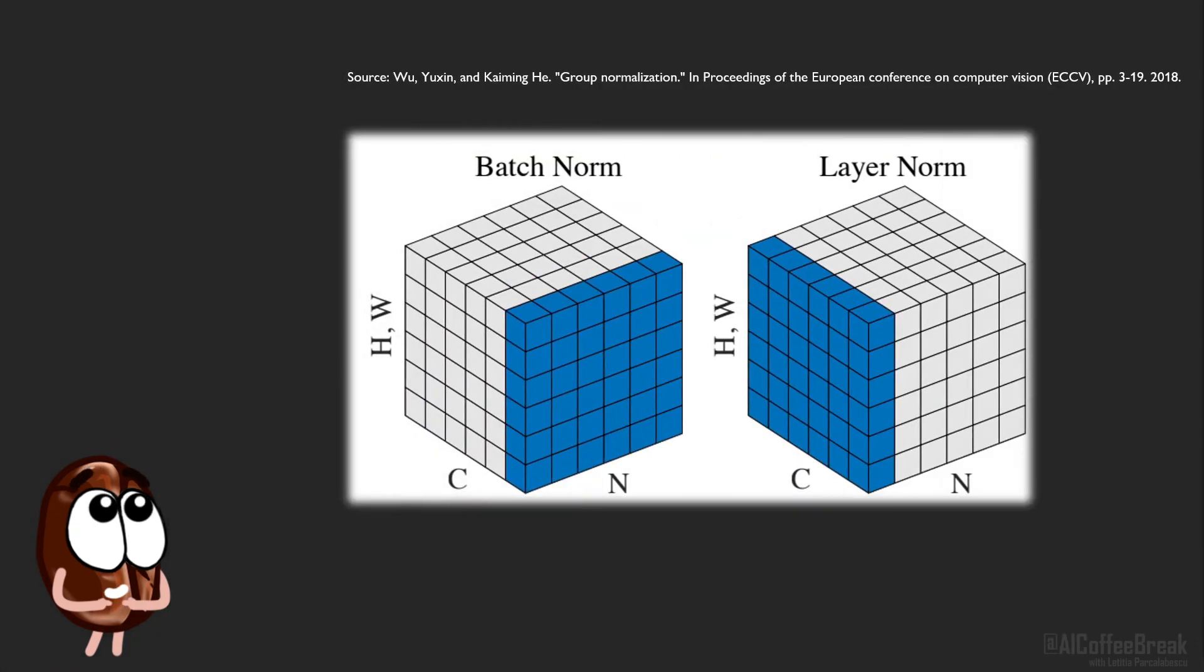Short reminder, in BatchNorm, a mini-batch of data that has multiple examples and features associated to it, the normalization happens across the batch or sample dimension. The batch normalization effect is that the magnitude of the features is similar across data samples in the batch. LayerNorm normalizes across the feature dimension, such that, per data sample, the features have around the same magnitude. Historically, LayerNorm was something that worked better for recurrent neural networks, whereas batch norm was mostly used in ConvNets.